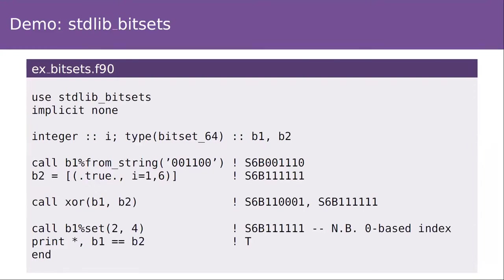Here I'm initializing two bit strings — one from a string and one from an array of logicals. The comments show what a literal bit string value looks like for the purposes of derived type I/O: a read or write statement represents your bit string where the prefix S6B means a set of six bits, followed by the actual zeros and ones. Most operations with BitSets work in place rather than creating new instances. All your usual Boolean algebra operations like exclusive OR are submitted to subroutines that overwrite the first argument. This is in line with the idea that if you're using BitSets you're probably being very memory conscious, so we implement this functionality to be as parsimonious with memory as possible.